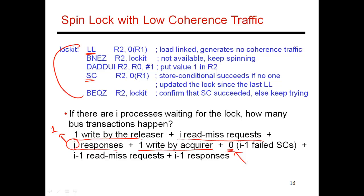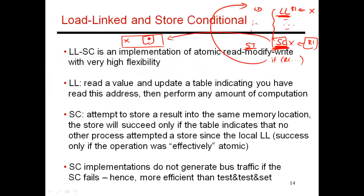After that, all the other threads loop back up and try to do a load link, leading to i-1 read miss requests and i-1 responses, which could again be optimized to a single response since everyone is just trying to get a read-only copy of the same cache block. This shows how load link store conditional leads to less coherence traffic. It is also easier to implement in hardware, because previously we had to make sure that an atomic exchange was happening atomically. Here, the load link and the store conditional are completely independent, so the read and the write are completely independent instructions. All we have to do is make sure that when the store conditional is ready to happen, the check of the table and the outcome of the store conditional all happen atomically — making this implementation a little bit easier in hardware.